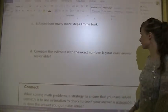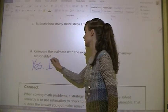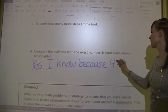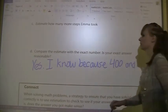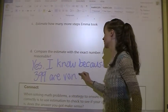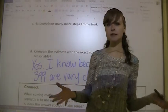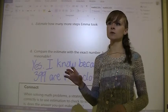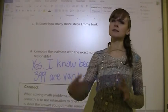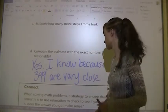Compare the estimate with the exact number. Is your exact answer reasonable? Yes, I know because 400 and 399 are very close. That's basically what you're doing: you're finding real answers and estimates and seeing if the answers are close. Keep in mind, if you round to the nearest thousand, your estimate might be really off. Try to estimate to the nearest hundred, sometimes to the nearest ten, depending on the problem.